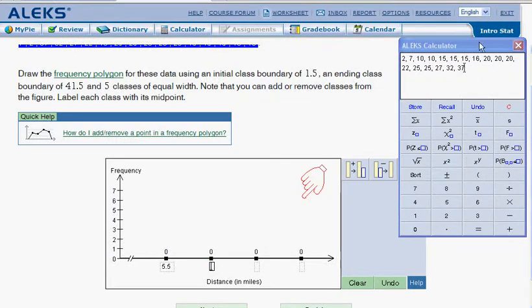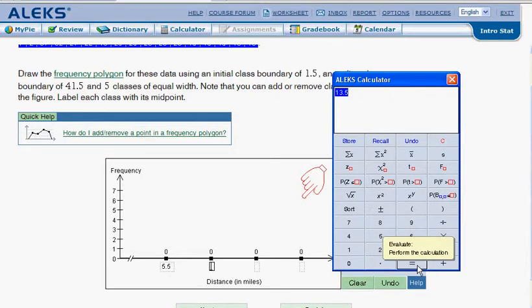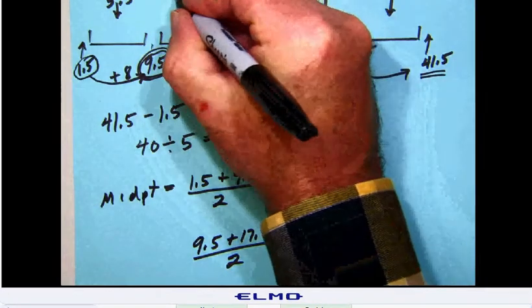The bad part here is that we're going to lose our values, but we can get them back. So we're going to take our 9.5 plus our 17.5, and I'll highlight those, divide the entire quantity by 2, and we will get our answer of 13.5, which is going to be our next class midpoint, 13.5.